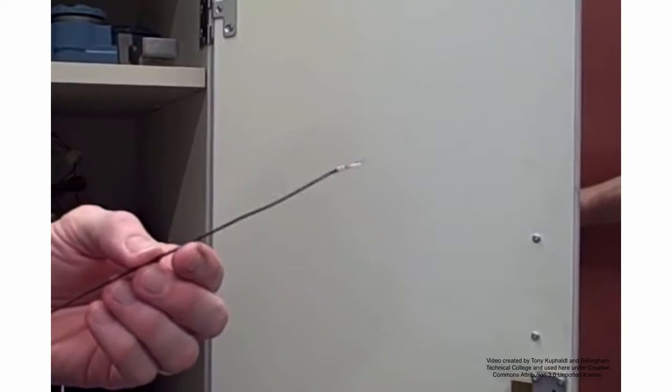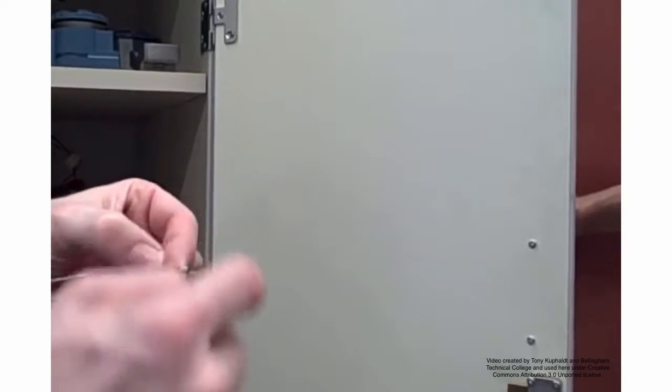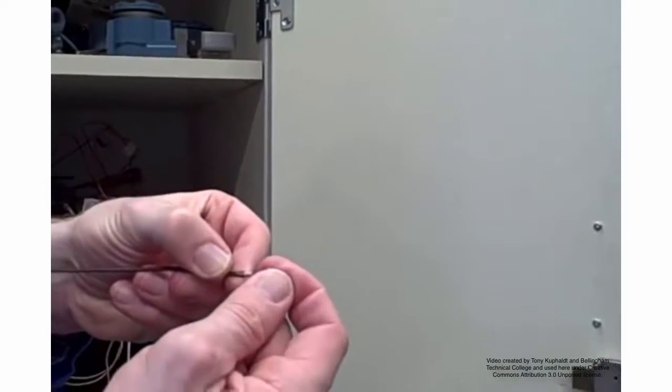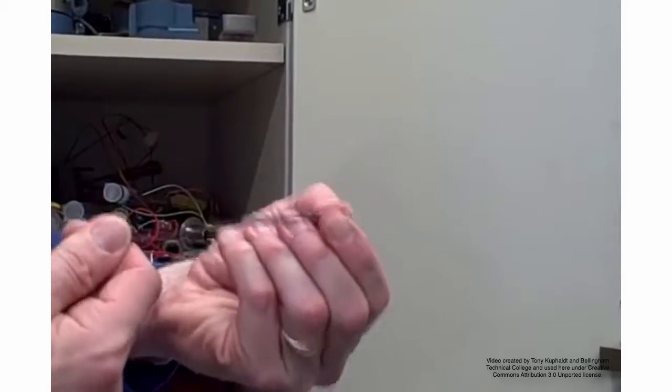This right here is thermocouple grade wire. You can tell that from the brown sheath. And if we simply took these two wires here and twisted them together, or spot welded them, or otherwise clamped them, or silver soldered, that itself would form a thermocouple junction.